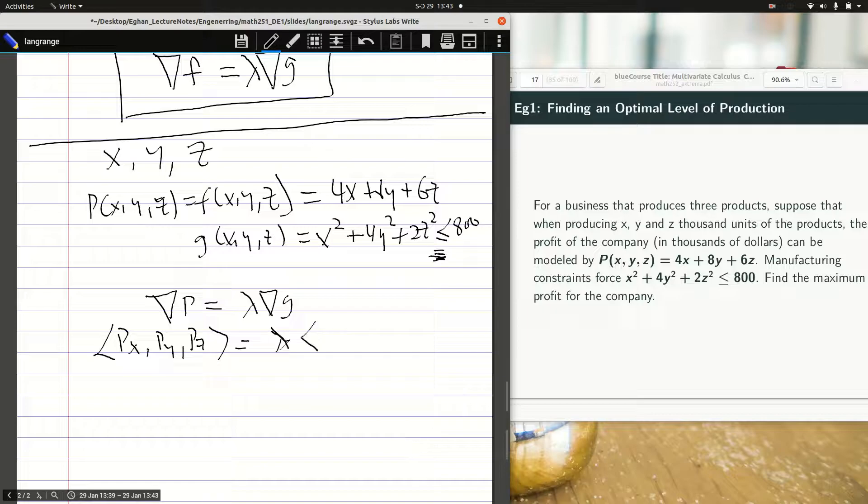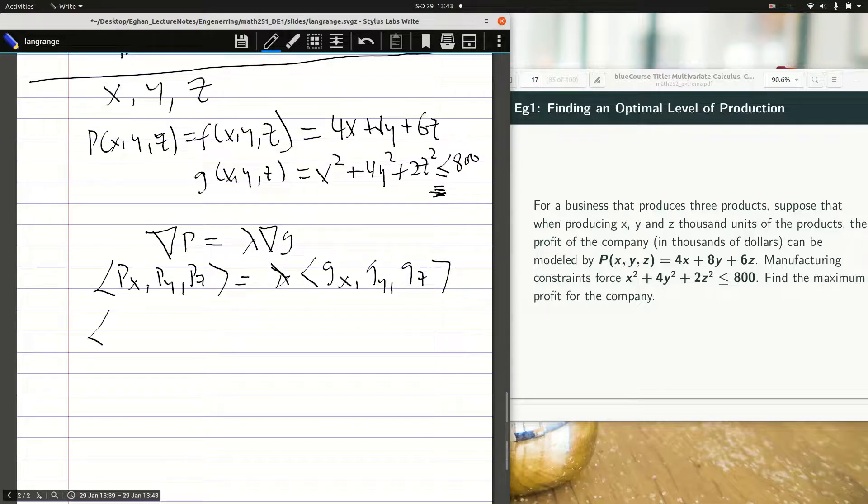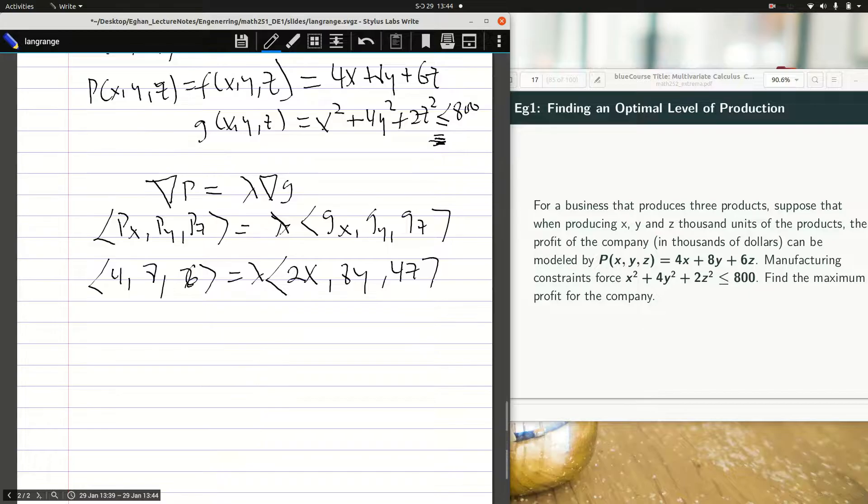Let's take it. Partial derivative with respect to X, I get 4. I have 8 here, and then 6 as you would agree. And then lambda constraints part I have 2X with respect to Y, 8Y with respect to Z becomes 4Z. I can expand this and have it as 2 lambda X, 8 lambda Y, 4 lambda Z.